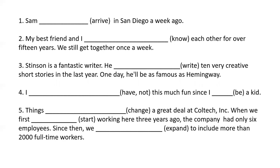Sentence two: 'My best friend and I have known each other for over 15 years; we still get together once a week.' This sentence does not have a specific time in the past — it gives a duration but not a specific point. Most importantly, 'we still get together' shows the friendship is ongoing with a present effect. Therefore, the verb 'know' must be in the present perfect: 'My best friend and I have known each other for over 15 years.'